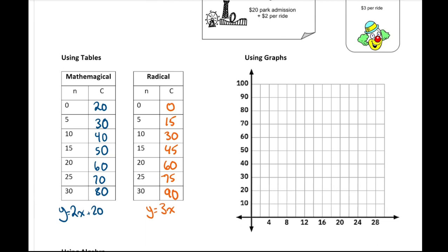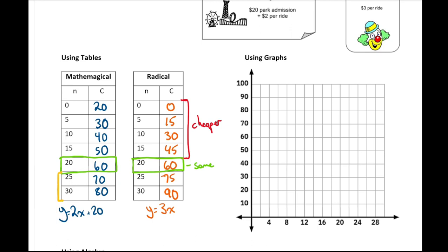Now using the tables side by side, we can see when one park is cheaper than the other. Looking at the amounts, anywhere from zero up to just below 20 rides, Radical Island seems cheaper. We should also see that there is a point where the cost is the same for both parks. At 20 rides, it doesn't matter which park you go to — it's the same cost.